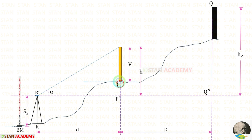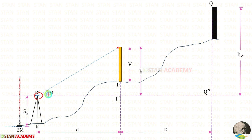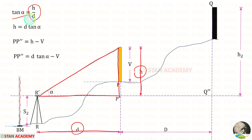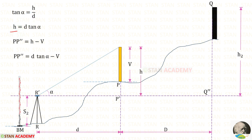Now from station P we have to remove the theodolite and place a staff or vane with a known height. Let us keep the height of the vane as v, and let us keep the height from the top of the vane to the instrument axis line as H. From station R we have to focus the top of the vane and take the reading of the vertical angle. Let us keep the vertical angle as alpha. In this triangle, tan alpha equals H upon D, so H equals D tan alpha.